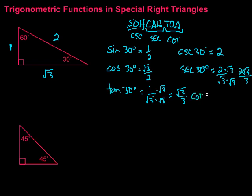The cotangent of 30 degrees is the reciprocal of the tangent. Rather than flipping the rationalized form and getting a radical back in the denominator, we go back to the original fraction 1 over square root of 3, and flipping that gives us the square root of 3 over 1, which is just the square root of 3. So we now have all six trigonometric functions for 30 degrees.